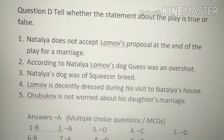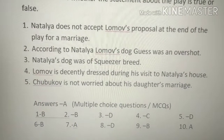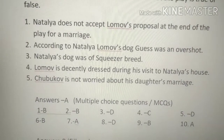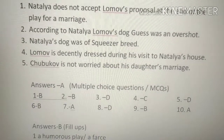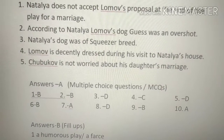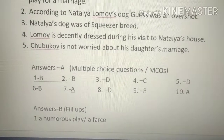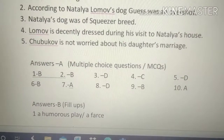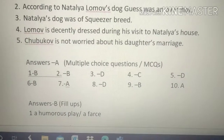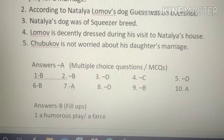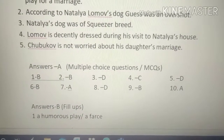Now Part D: 'Tell whether the statement about the play is true or false.' Statement 1: Natalia does not accept Lomov's marriage proposal at the end of the play — she does accept it, so this statement is FALSE. Statement 2: According to Natalia, Lomov's dog Guess was an overshoot — the upper jaw is bigger than the lower — this is TRUE. Statement 3: Natalia's dog was of Squeezer breed — TRUE. Statement 4: Lomov is decently dressed during his visit to Natalia's house — TRUE. Statement 5: Chukhbhav is not worried about his daughter's marriage — he is very much worried, so this is FALSE.